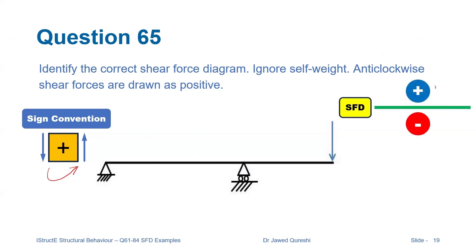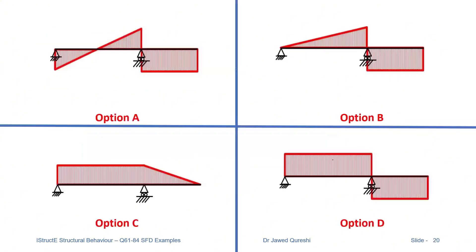Positive forces are drawn at the top of the baseline and negative forces at the bottom. We have four options to choose from. The first step I would always take is to draw the deflected shape and find out the direction of reactions. This is a crucial step in finding the shear force diagram.